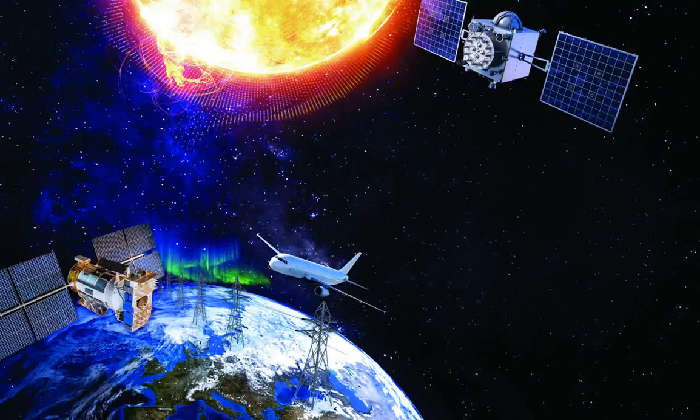159 years ago, our sun belched out a sea of charged particles aimed at Earth. It sped toward us at millions of miles per hour, walloping the planet hard enough to add all the world's telegraph systems and bring the northern lights as far south as Jamaica.